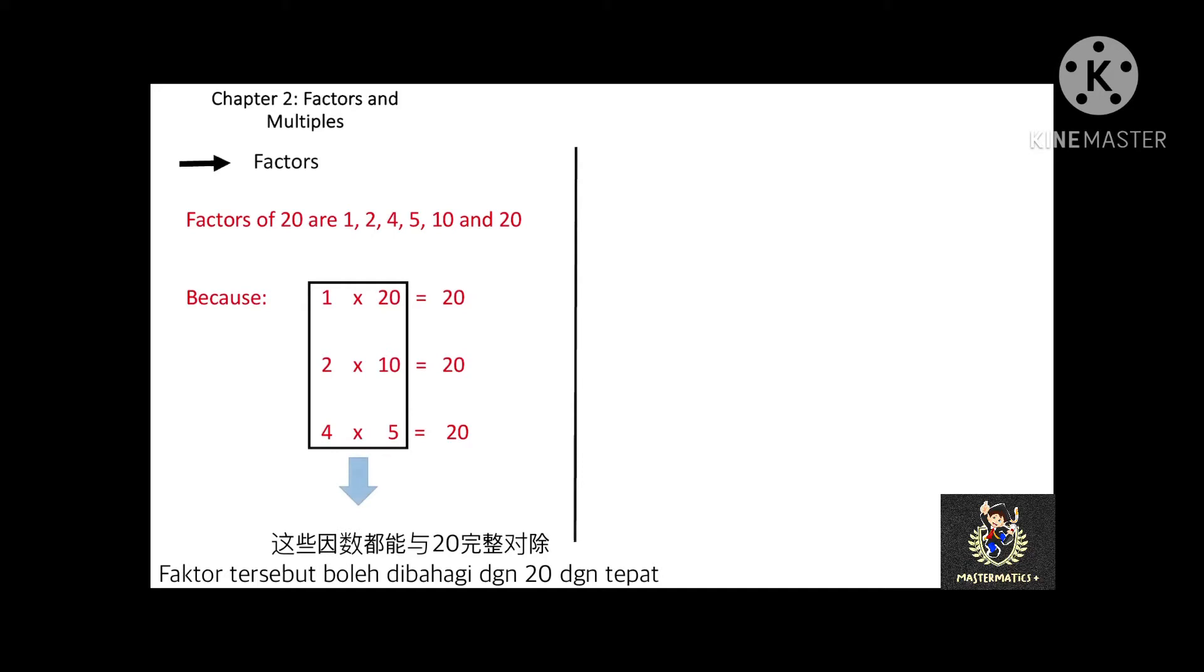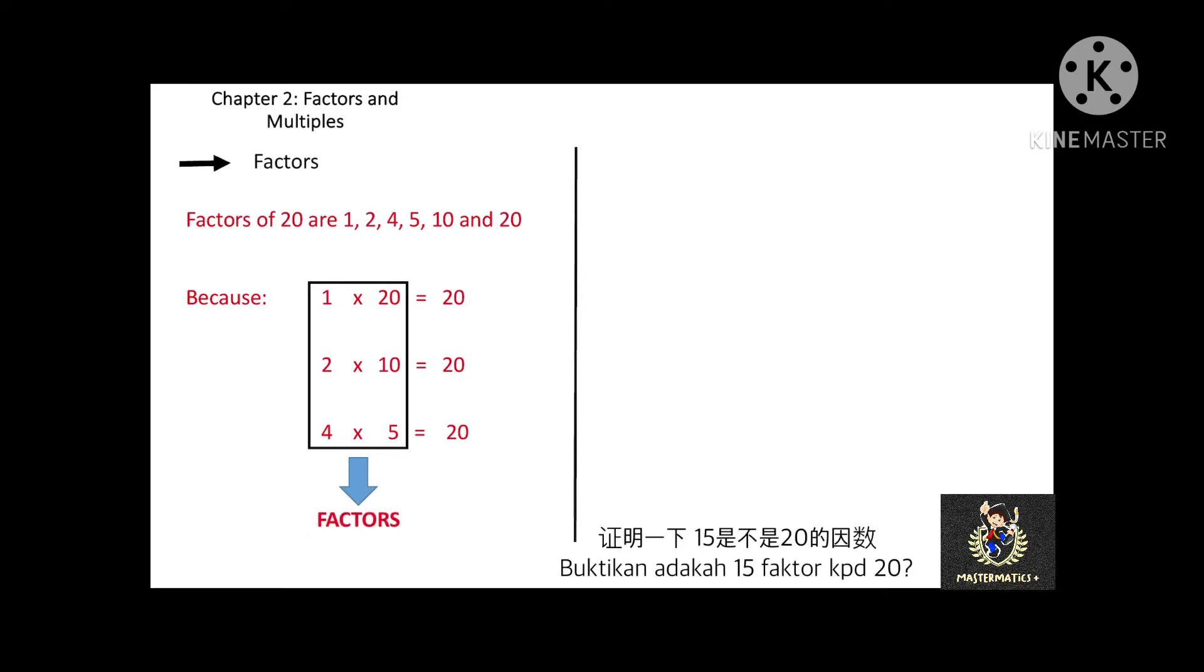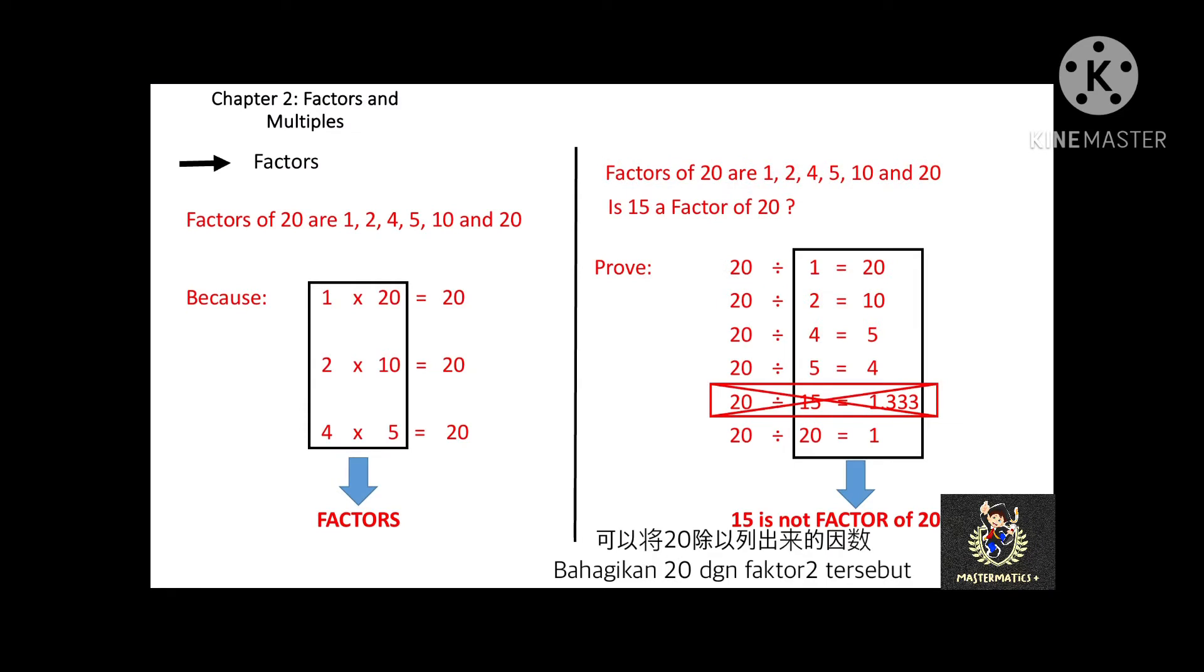And you will notice, 20 can be divided by all these factors to get a round number. If I say 1, 2, 4, 5, 10, 15, and 20 is a factor of 20, can you prove that what I'm saying is correct or wrong? You can prove by divide 20 with the same factor and see whether you get a round number or not.